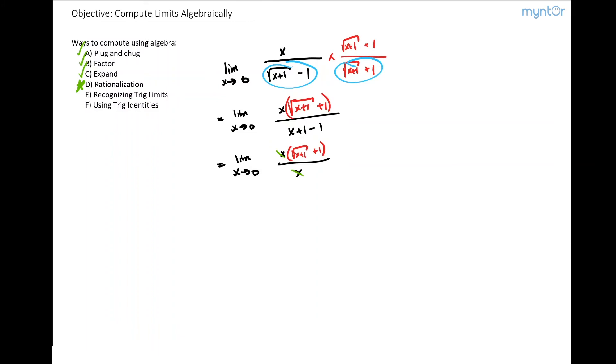We're left with the limit as x approaches zero of square root of x plus one plus one.